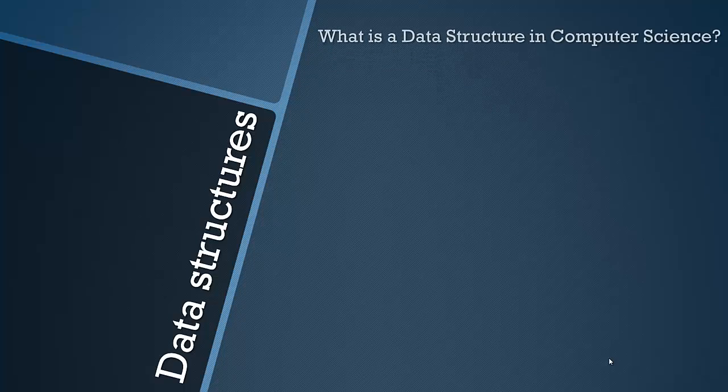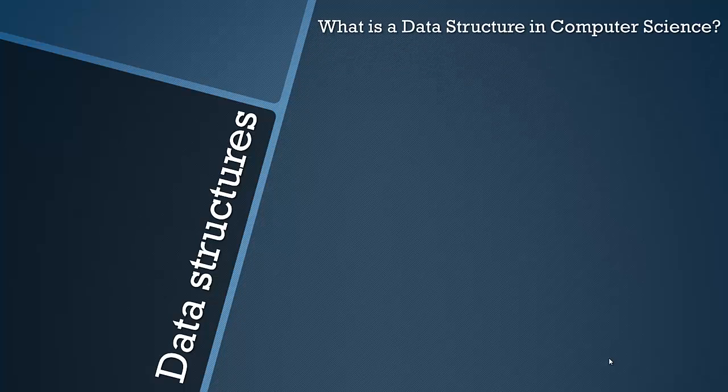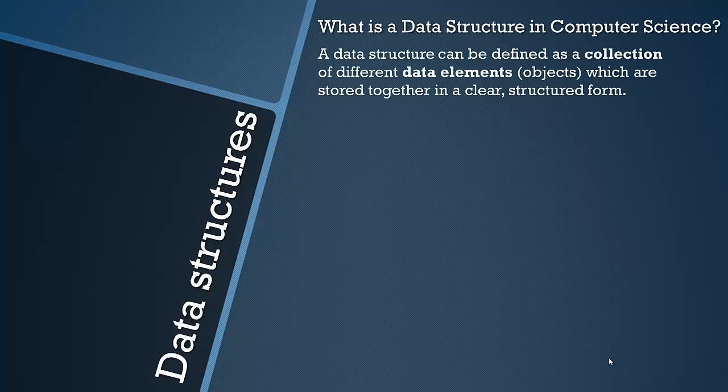First we're going to look at what a structure is, or more specifically a data structure in computer science, because this is quite a general term but we're looking at it purely from a computer science perspective. So a data structure can be defined as a collection of different data elements, or objects essentially, which are stored together in a clear structured form, and that is a very important part of the definition.